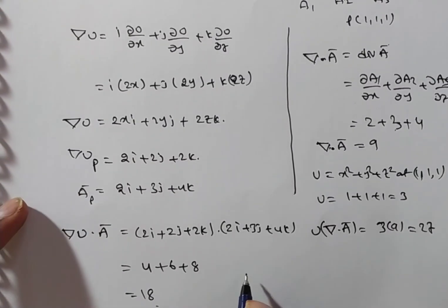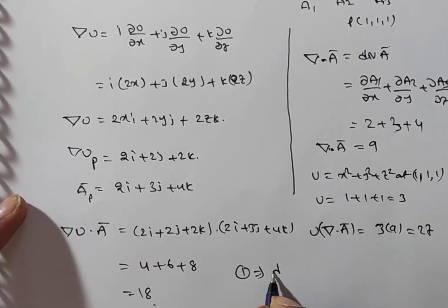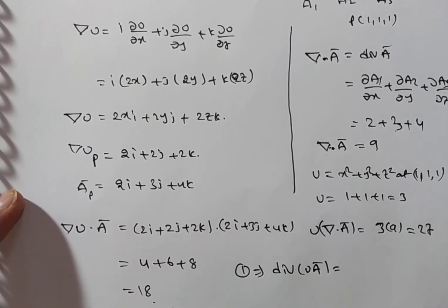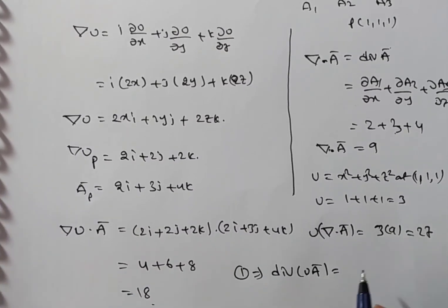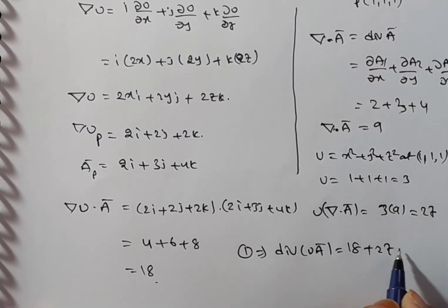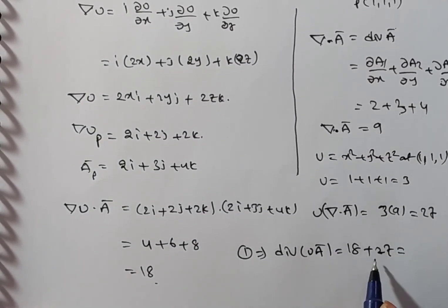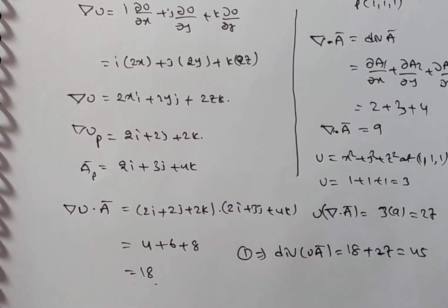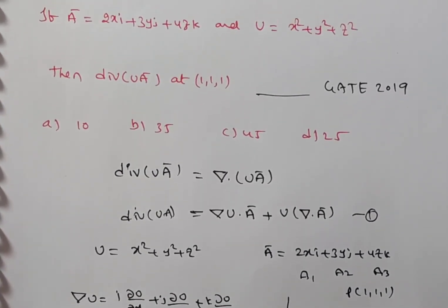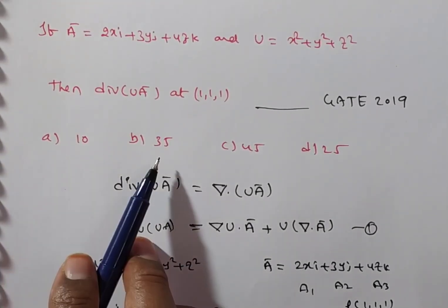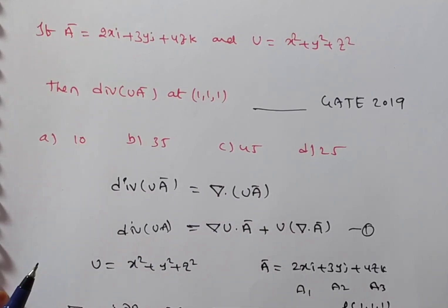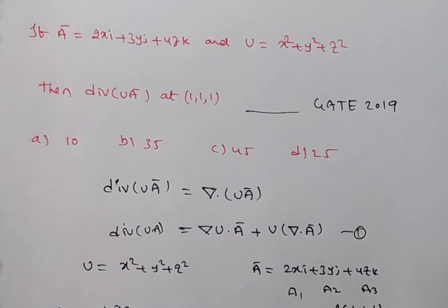Now, then equation number 1 implies div u a bar is equal to, first one, what do you have? Del u dot a bar. That is 18 plus u into del dot a bar. That is 27. So, how much you are getting now? 45. So, 45 is the answer. Verify in the options. Which option is correct now? Option a 10, option b 35, option c 45. So, option c is correct. Is it clear for everyone? Thank you for watching this video.